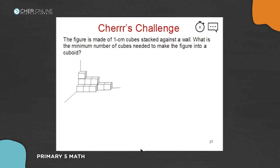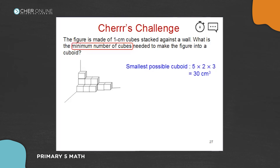So what do we need to do? Cody mentioned that we work out the cuboid's volume first, which is 5 times 2 times 3. The smallest possible cuboid in this case is 5 times 2 times 3, because if you look carefully at the length, there are five in the front, followed by a two at the side — also known as the breadth — and the height reaches a maximum of three. That's why it's 5 times 2 times 3.